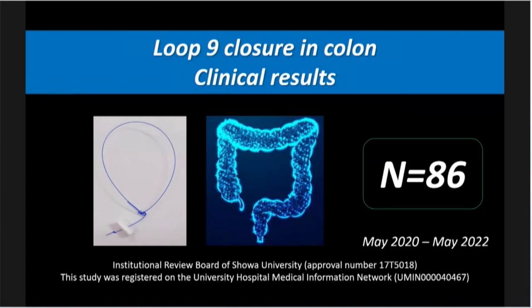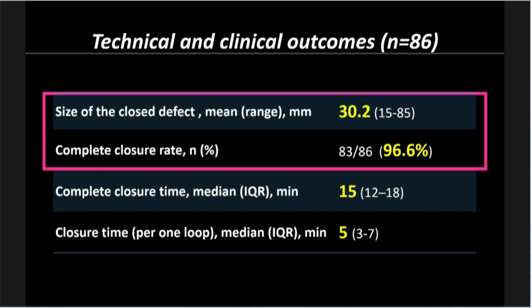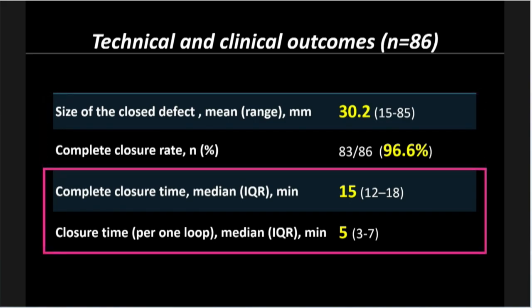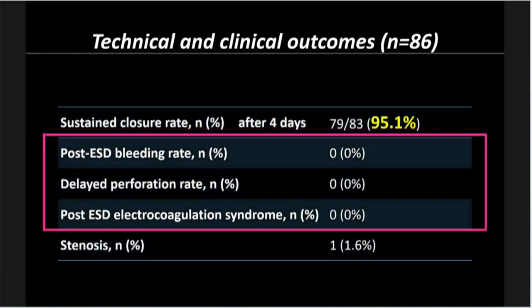This is the clinical results in the colon. The data is at the time of over 86 cases. Location and size of the defect is an average of three centimeters. The success rate of closure is 96%, and the complete closure time is 15 minutes. Most importantly, we don't need to change our scope — we keep the same scope and just insert the catheter to the site. The sustained closure rate after four days check-up is 95%. So far, we have no complications.